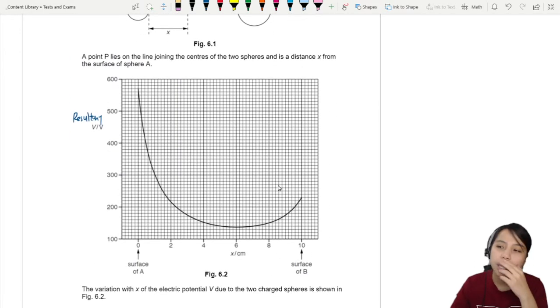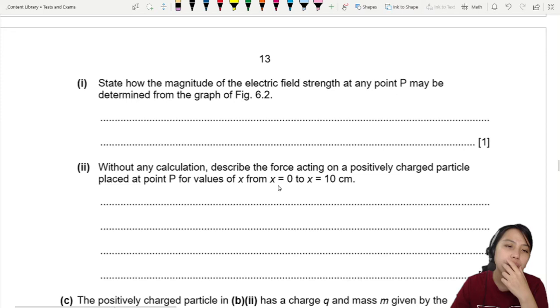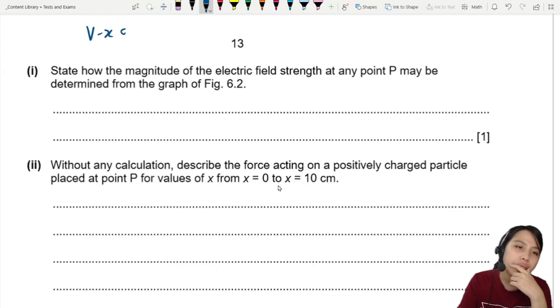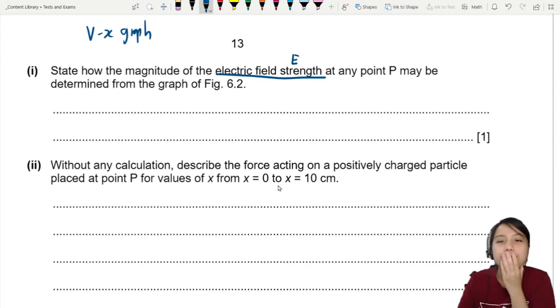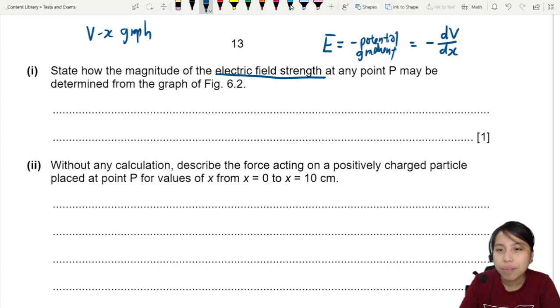This is a what graph again? Potential against distance. So from a V-x graph, we need to think how electric field relates to potential. V-x graph. Electric field, we use the symbol E. And there is one definition you must know, and that is: electric field strength is known as the negative potential gradient by definition.